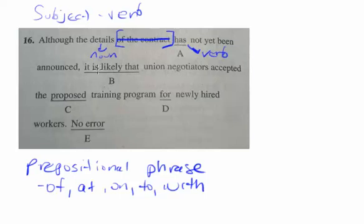That's going to help us hear the subject-verb agreement. Let's try reading it now: 'Although the details has not yet been announced.' That sounds wrong. What about 'the details have not yet been announced'? That sounds like English. So once you cross off the prepositional phrase, read it out loud — even move your lips if you're taking a test — and you should be able to hear the subject-verb agreement a lot more easily without that phrase.